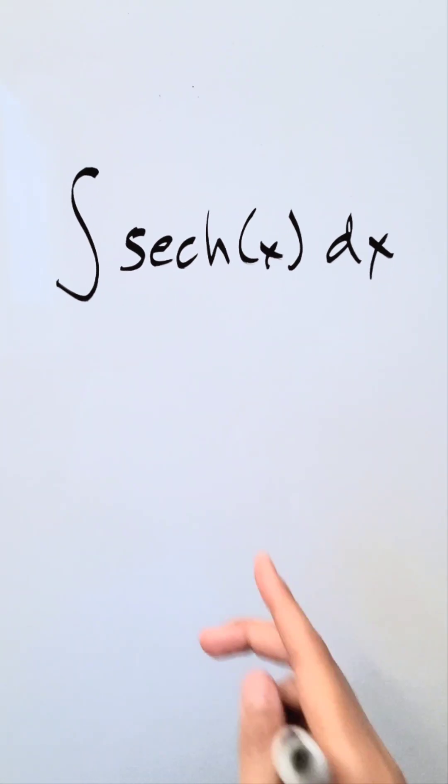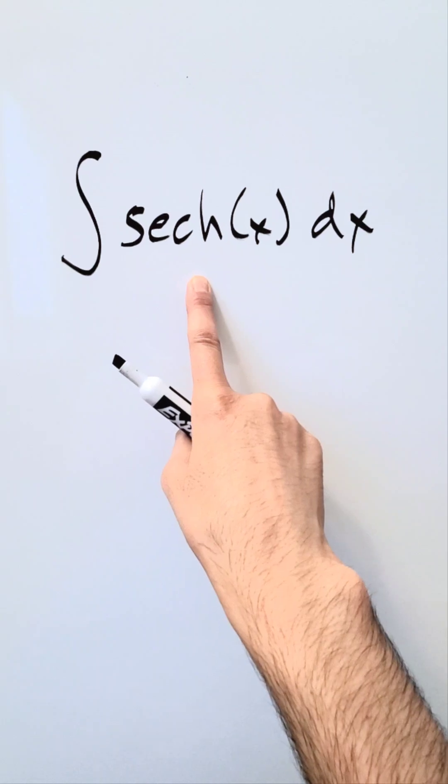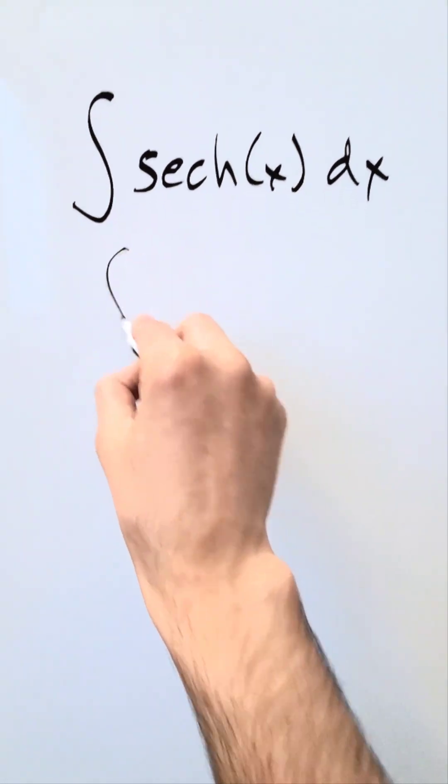Let's find the antiderivative of this hyperbolic function, your hyperbolic secant. How can we do it? Using algebra, let's show you.